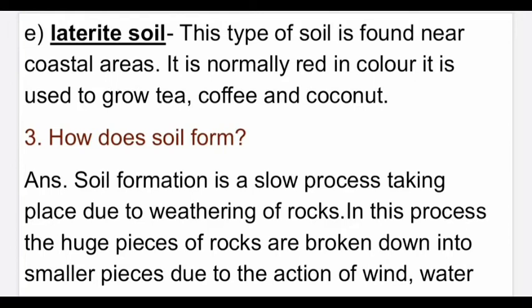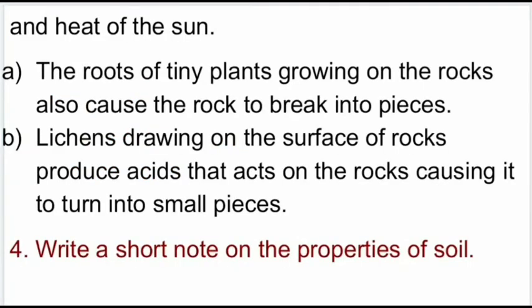Third question: how does soil form? Answer: soil formation is a slow process taking place due to weathering of rocks. In this process, the huge pieces of rocks are broken down into smaller pieces due to the action of wind, water and heat of the sun. First point: the roots of tiny plants growing on the rocks also cause the rock to break into pieces. Second point: lichens growing on the surface of rocks produce acids that act on the rocks, causing them to turn into small pieces.